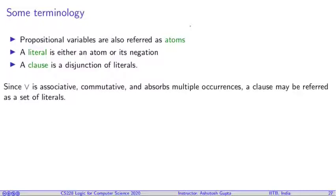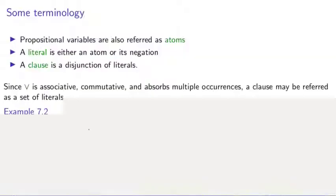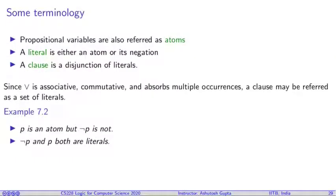A literal can be a variable P or it can be not P. For example, P is an atom, but not P is not an atom, it is a literal. We will consider both not P and P as literals.